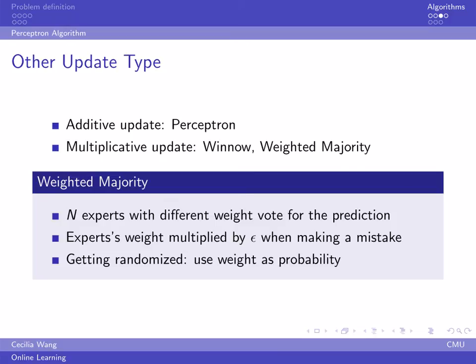We can come up with some other algorithms that are similar to perceptron. Perceptron uses additive type updates. We may also use multiplicative updates like Winnow and weighted majority.